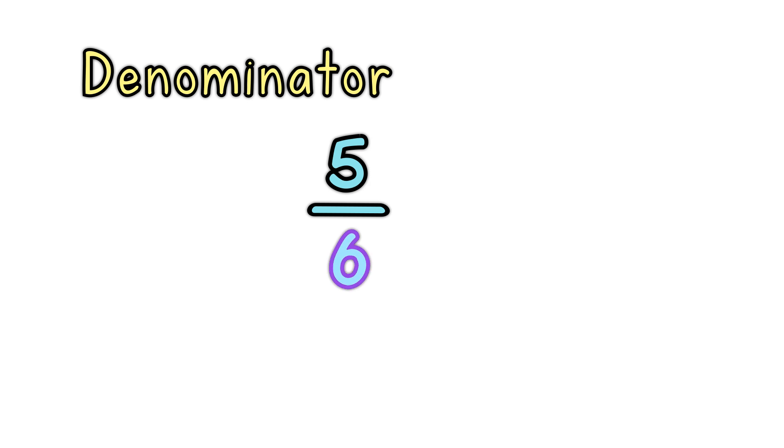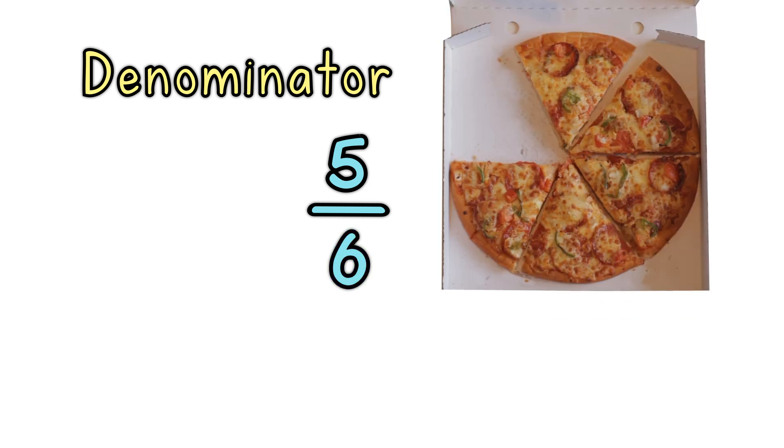The denominator is the bottom number in a fraction. It shows how many equal parts the item is divided into.